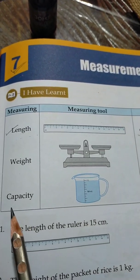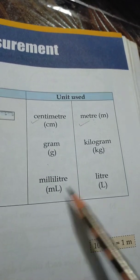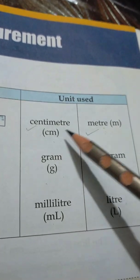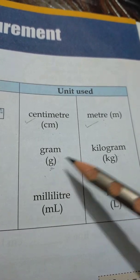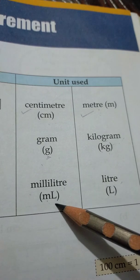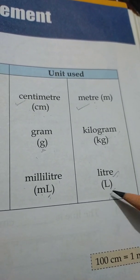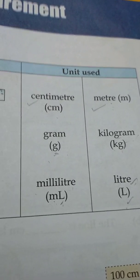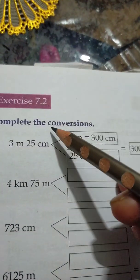For liquids, to find out the capacity, we are going to use milliliter and liters. Centimeter short form is cm, and meter short form is m. Gram is denoted by g, and kilogram is written as kg. Milliliters are written as mL — L is capital here — and liters are also used with capital L. Now for this purpose we are going to start Exercise 7.2, in which conversion is there.